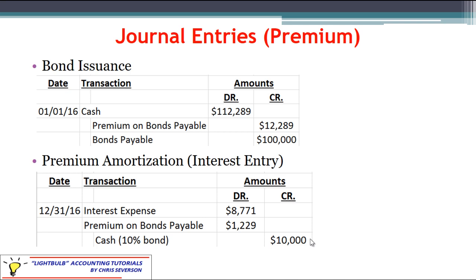Under the straight-line method, the next step is to figure out what amount of premium you're going to amortize. The straight-line method implies that every period is going to have the exact same amount of premium to amortize. It's a 10-period bond in this example, so we take that $12,289 and divide it by 10, giving us a rounded $1,229 premium amortization.